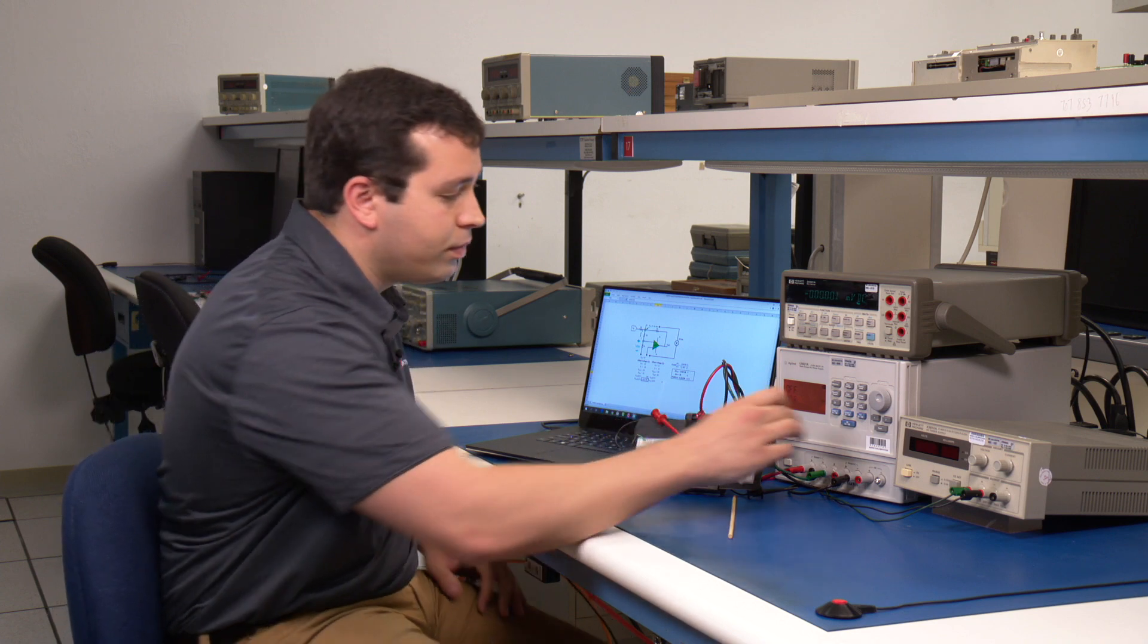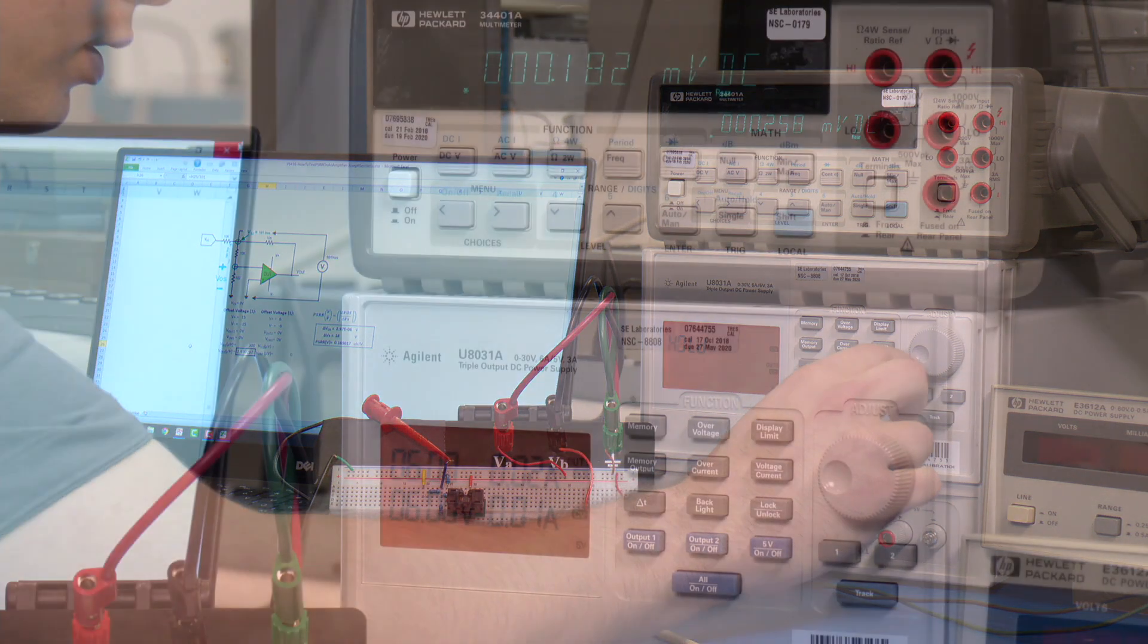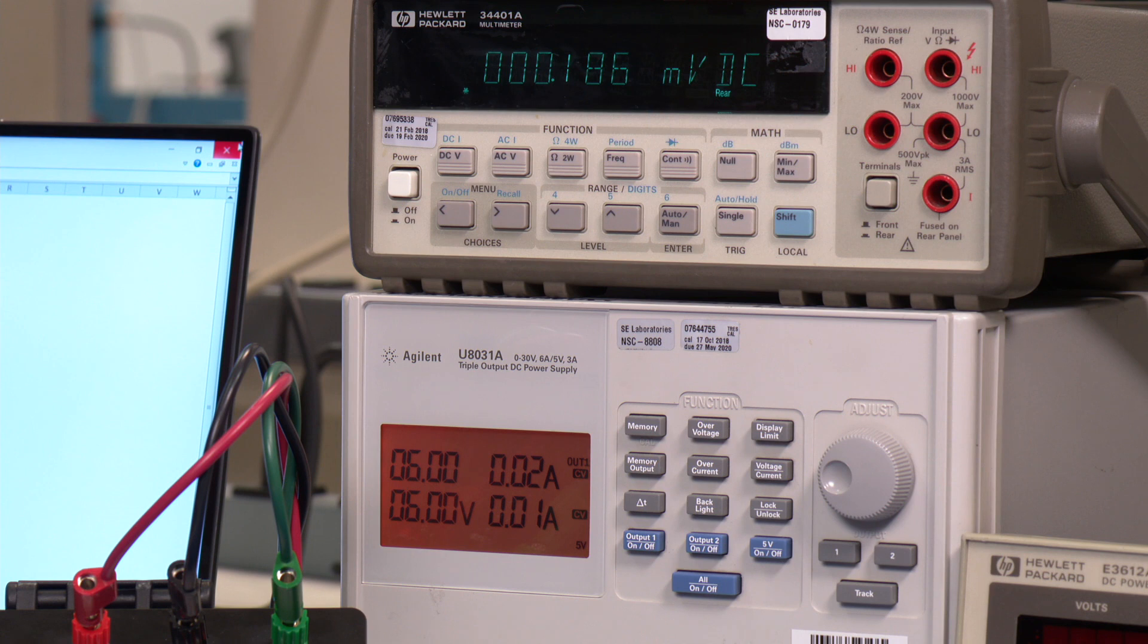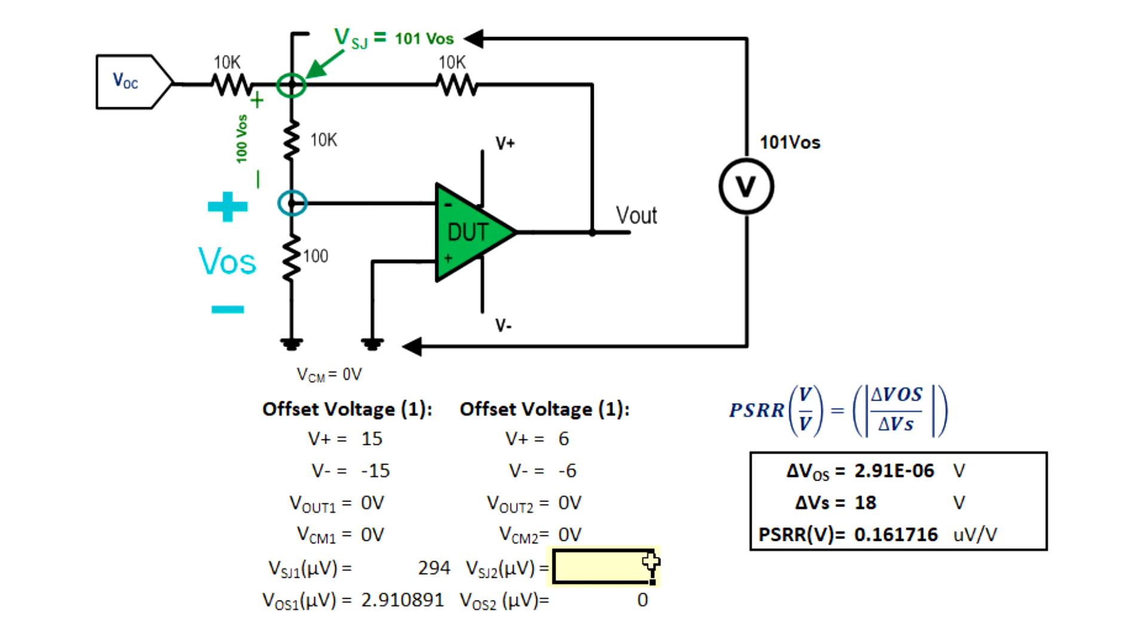Now let's measure the offset voltage at a power supply condition of plus or minus 6 volts. Remember to turn off the power supply voltage before changing conditions. In this condition, we see the output of the false summing junction circuit is approximately equal to 198 microvolts to 200 microvolts. In our spreadsheet, that equates to 2.9 microvolts per volt.